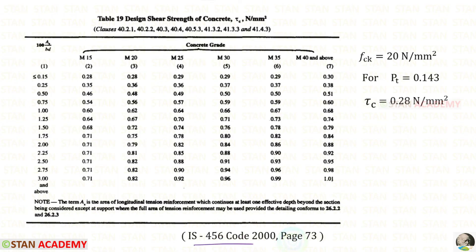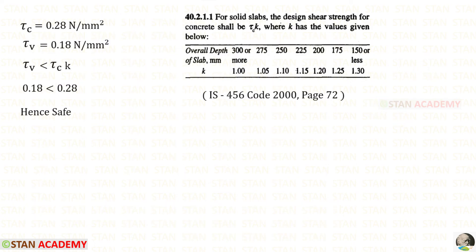Using the formula, we find Pt as 0.143. Opening the code book at page 73, we find tau C for FCK of 20. Since Pt is less than 0.15, tau C is 0.28. Opening page 72, we find the K value: for an overall depth of 600 mm, which is 300 mm or more, K is 1.